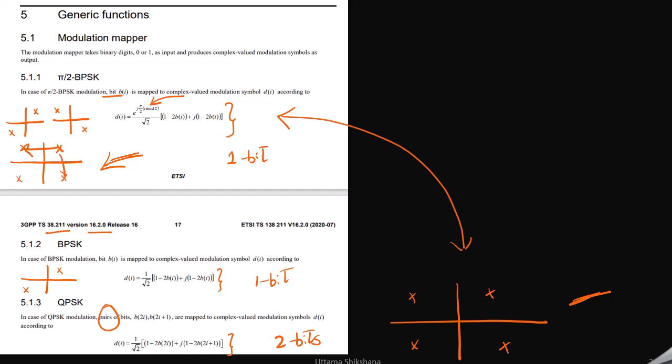So the symbol transition will happen from here to here and here to here. There won't be any symbol transition from here to here. If you see, the symbol transitions will happen only in these directions and there is no symbol transitions via origin.